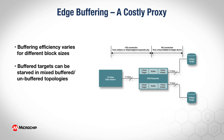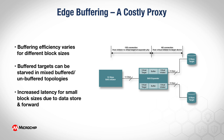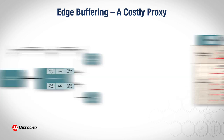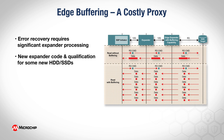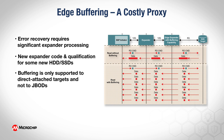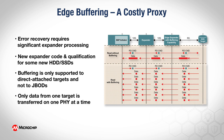The effectiveness of edge buffering is limited because buffering efficiency varies for different block sizes. Buffered targets can be starved in mixed buffered and unbuffered topologies. There is increased latency for small block sizes due to data store and forward. Error recovery requires significant expander processing, new expander code and qualification for some new HDD and SSD devices. Buffering is only supported to direct-attached targets and not to JBODs, and only data from one target is transferred on one PHY at a time.